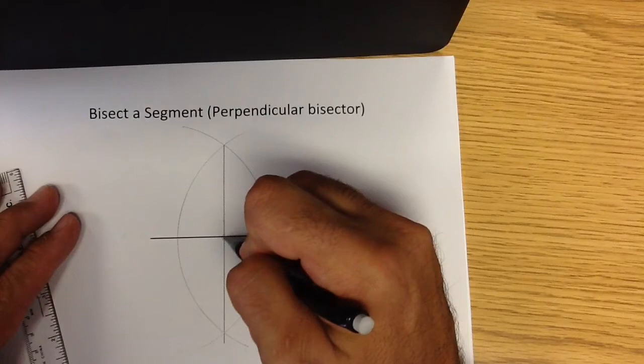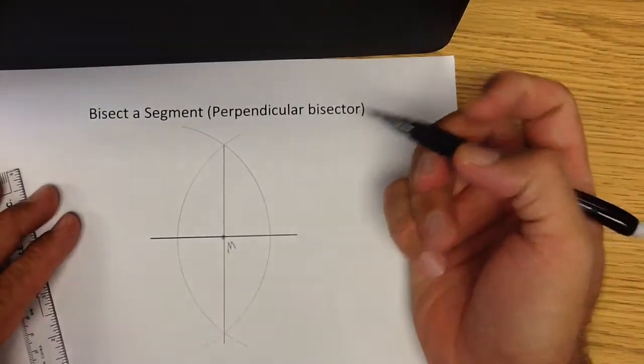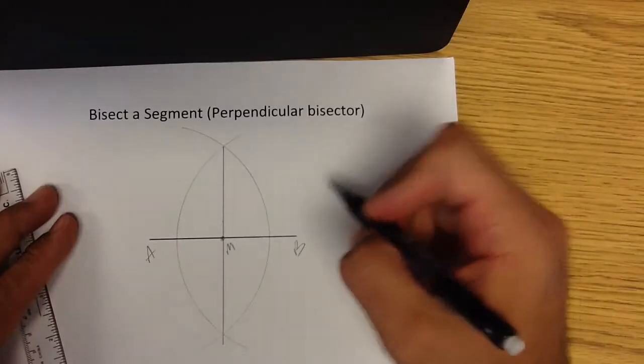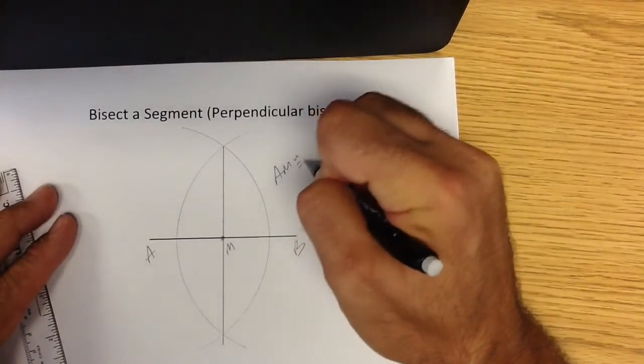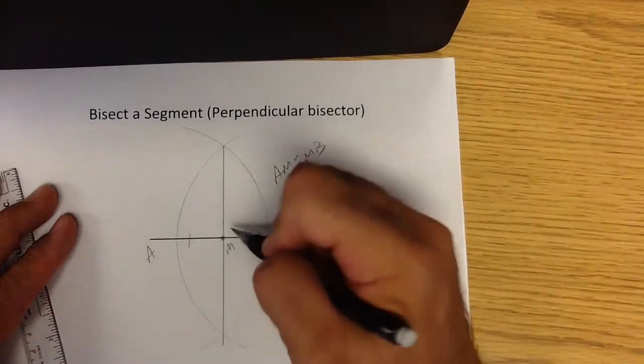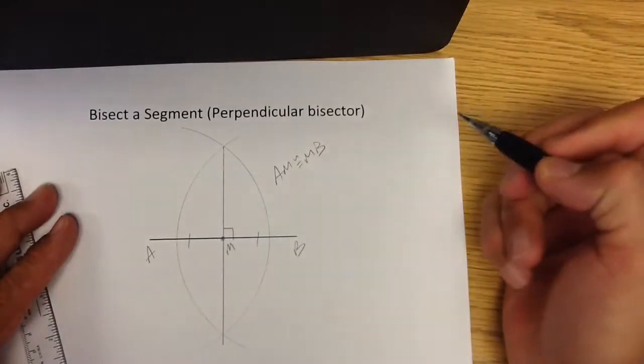So the interesting thing here is that in this case this would be my M or my midpoint. I'm going to call this A and B and I know a couple of things. First of all AM is congruent to MB so that is the perpendicular bisector and I also know that this is in fact a right angle.